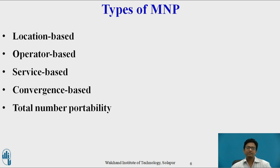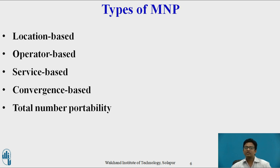Convergence-based portability allows usage of the same number while shifting from fixed to mobile telephone. Lastly, total number portability enables usage of the same number across different technologies, different geographical regions, and different national boundaries. It would require a collaborated effort on a global scale among different service providers, and is a combination of different types of portability options.